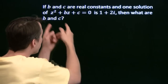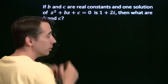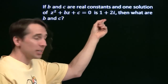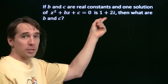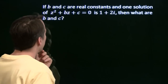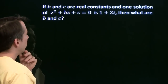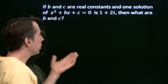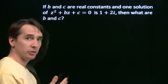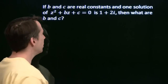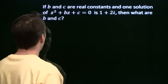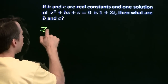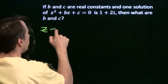All we're told is that b and c are real, and that one of the solutions for z in this quadratic is 1 plus 2i. Now we do have one of the solutions, and we can write the solutions for z in terms of b and c — we can write them just using the quadratic formula.